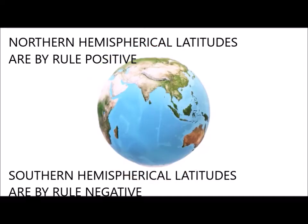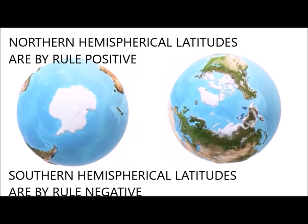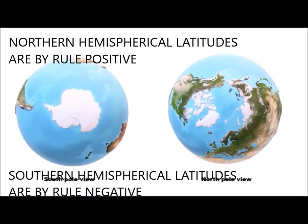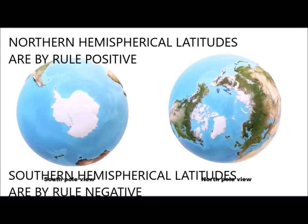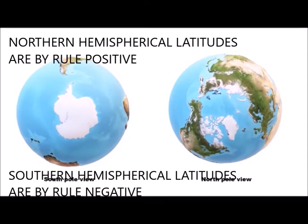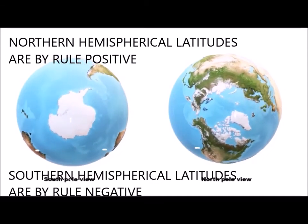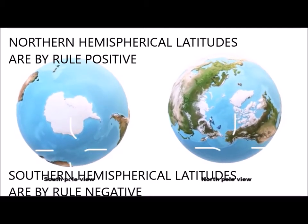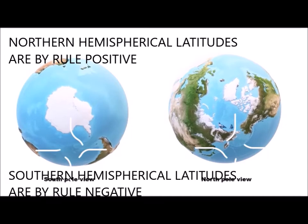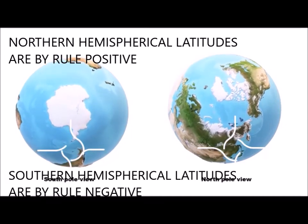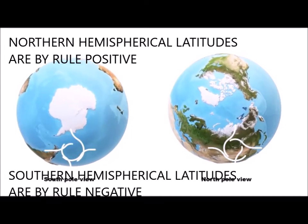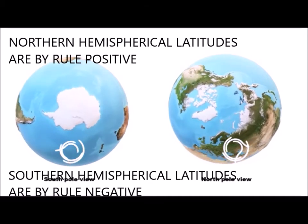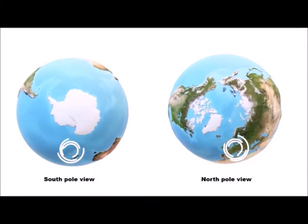But in the southern hemisphere, the direction of the spin of a hurricane is opposite. Because if the rotation of the earth is seen from the south pole, it appears clockwise. Because of this, objects in this hemisphere are deflected from their actual path to the left, and hurricanes formed in this hemisphere keep spinning clockwise.